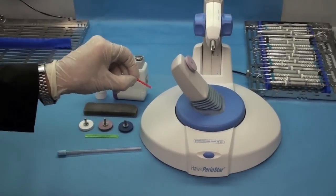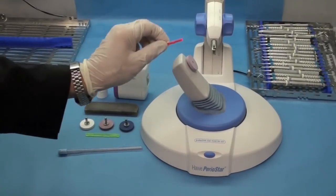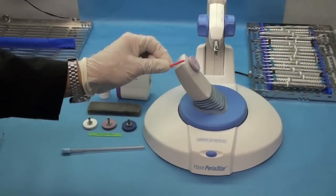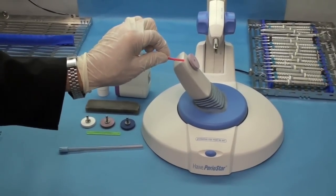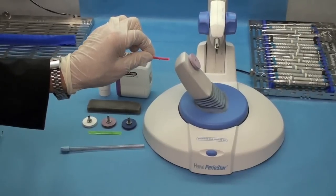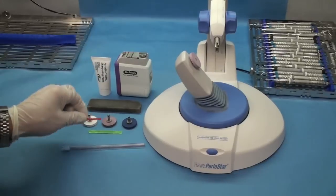This tip comes with the Periostar and it has a little magnet in it. And when you put it on the blade, it'll tip to the right or to the left as to which side the cutting edge is. Or if it stays straight, then you know it's a universal instrument that has a cutting edge on both sides, so you know which side to sharpen.